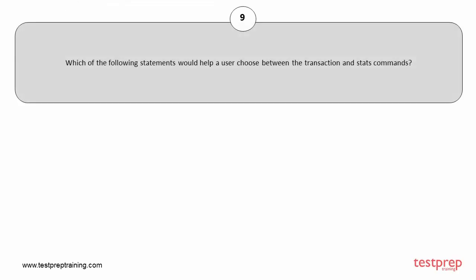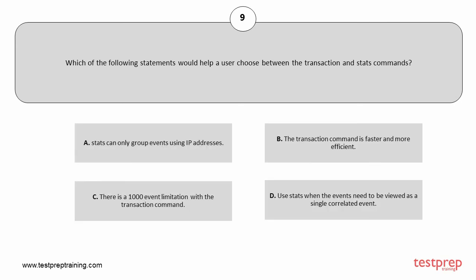Question number 9. Which of the following statements would help a user choose between the transaction and stats commands? Your options are: A. Stats can only group events using IP addresses. B. The transaction command is faster and more efficient. C. There is a 1000 event limitation with the transaction command. D. Use stats when the events need to be viewed as a single correlated event.